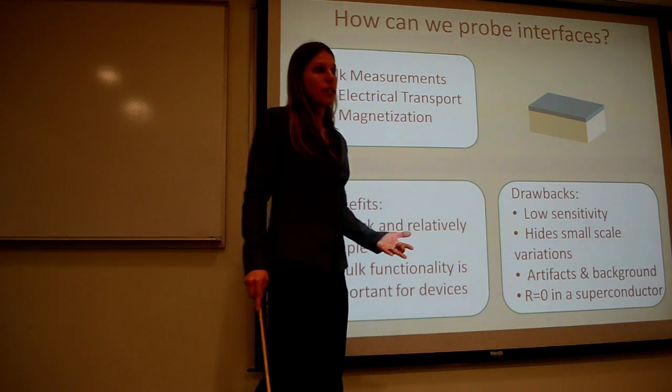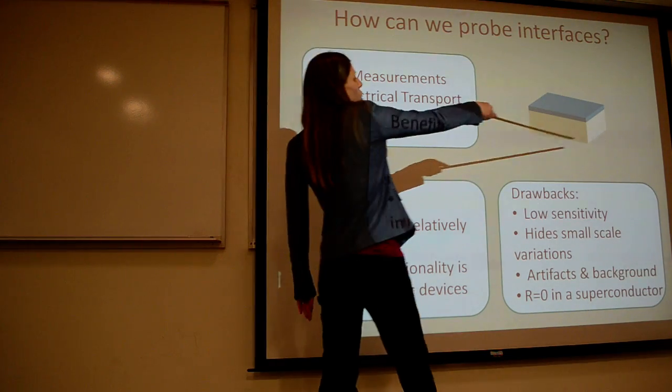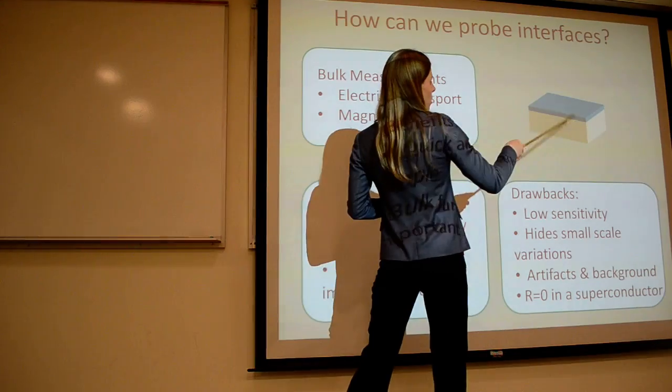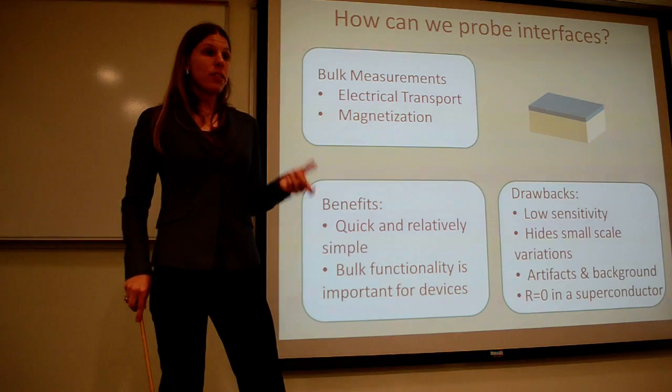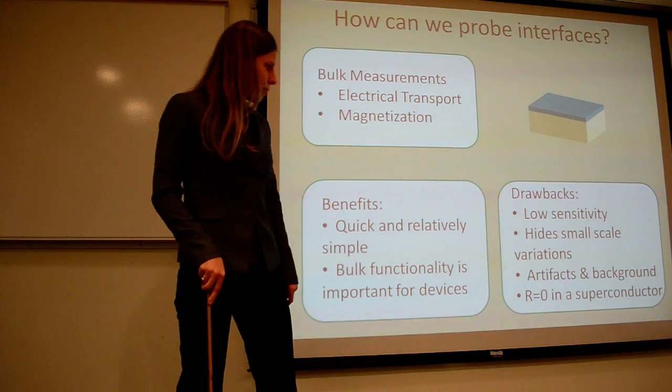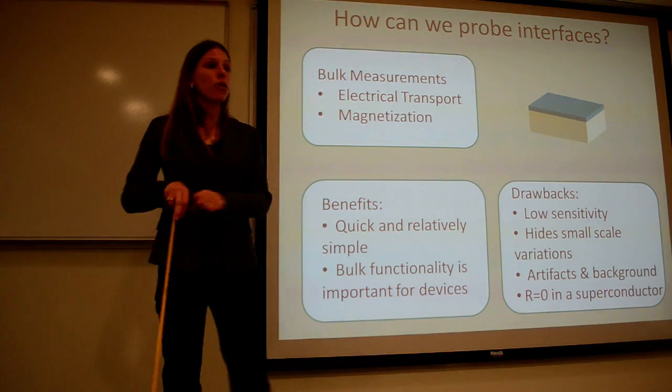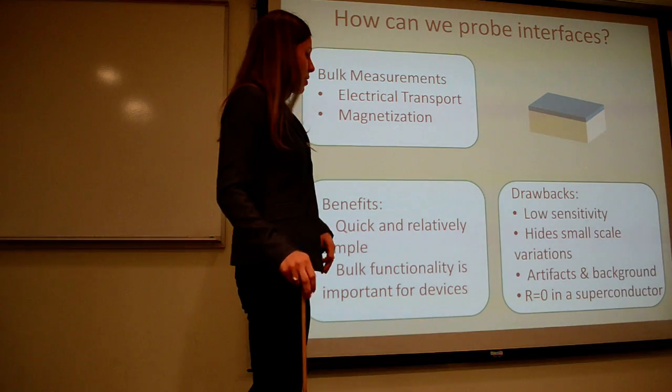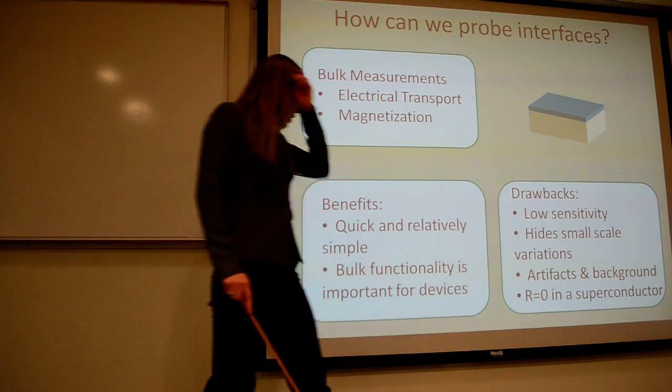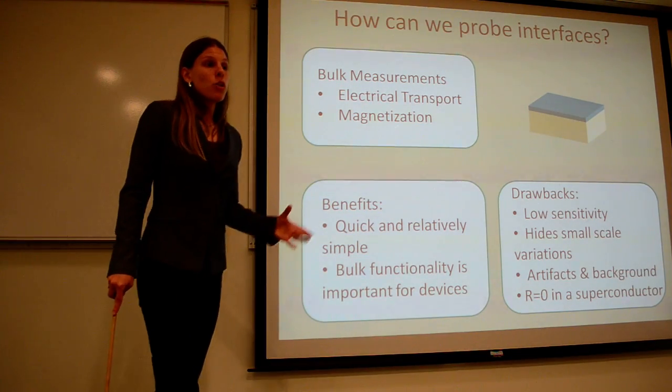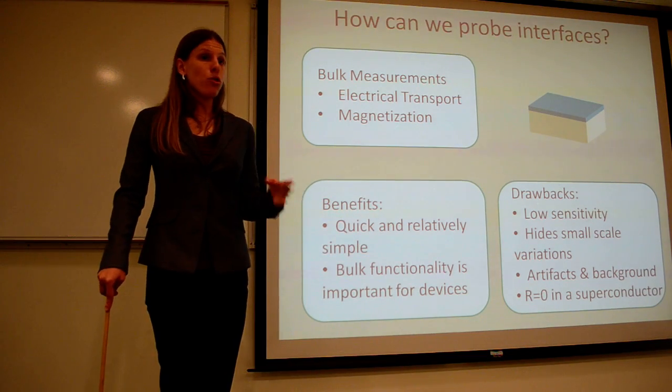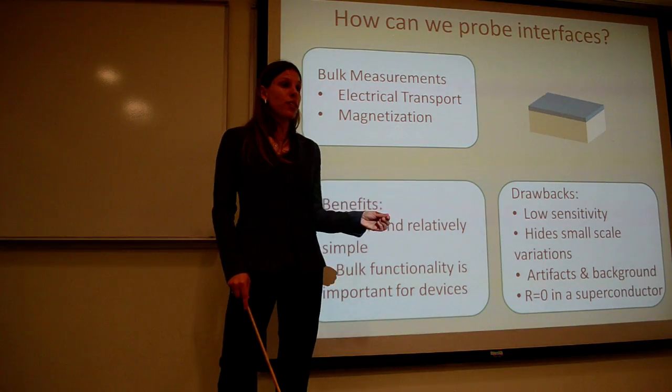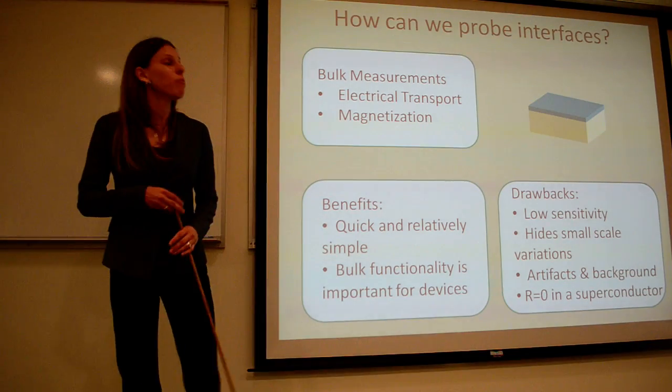Also, specifically a problem again with magnetization is artifacts and background. You're putting this whole bulk sample into a magnetic field. And really, all we're interested in is what's happening at the interface. So if either of the bulk materials are providing some kind of signal, then it's very hard to separate that out. And you can also get artifacts in transport if your patterning isn't aligned exactly correct. You can get longitudinal resistance in your Hall resistance and vice versa. And finally, in a superconductor, the resistance drops to zero. So if you really want to study the temperature dependence of the superfluid density, for example, you can't do that via resistance. So transport is very sensitive right near TC, but anywhere below TC, you don't really have much information about the state.